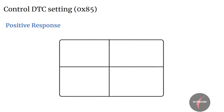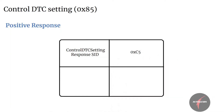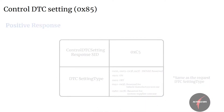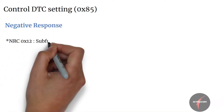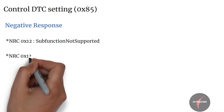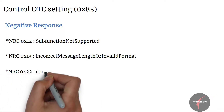Let's look into the positive response. The positive response contains the Control DTC Setting response SID, that's C5, and the sub-function which is set the same as the request sub-function, that is DTC setting type. Following are the NRCs supported: NRC 12, that is sub-function not supported — this NRC shall be sent if the sub-function parameter is not supported. NRC 13, that is incorrect message length or invalid format — this NRC shall be sent if the length of the message is wrong.